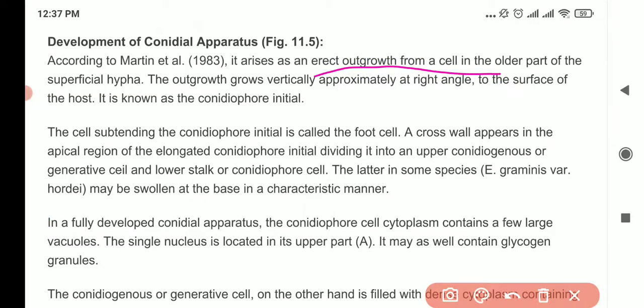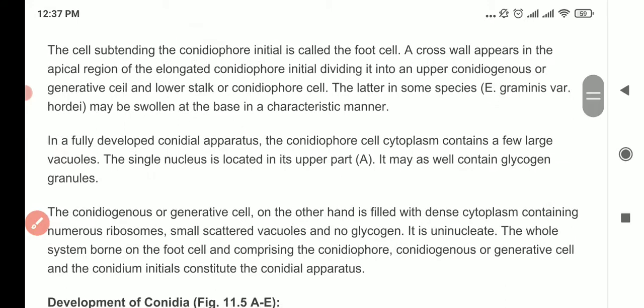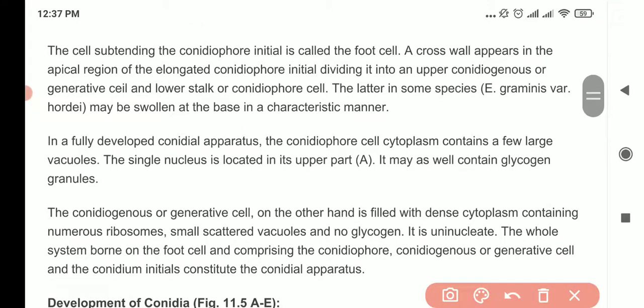So how it develops: it is an erect outgrowth from a cell in the older part of the hypha. It grows upwards at right angle to the surface of the host, known as a conidiophore initial. There's a foot cell.